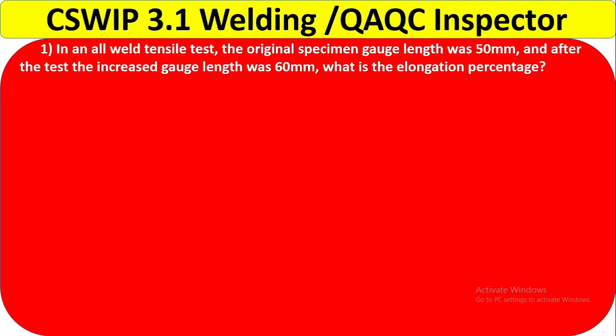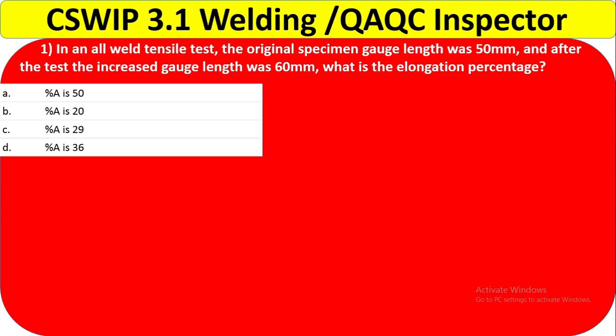Question 1: In an all-weld tensile test, the original specimen gauge length was 50 mm and after the test the increased gauge length was 60 mm. What is the elongation percentage? The options are 50, 20, 29, or 36. You need to know the formula to answer this.